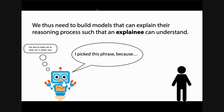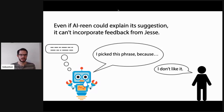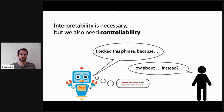Instead, we need to build models that can explain the reasoning process such that an explainee — in this case Jesse — can understand. For example, Irene explaining: 'I picked this phrase because it was the most salient to the entire article.' Jesse can then incorporate feedback. But even if Irene could explain the suggestion, it doesn't mean it can incorporate this feedback. So we've identified two necessary conditions: we need interpretable models that can explain the reasoning process, and controllable models that can update the reasoning process based on human feedback.